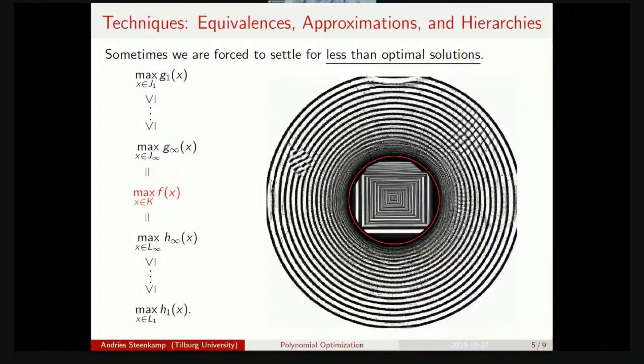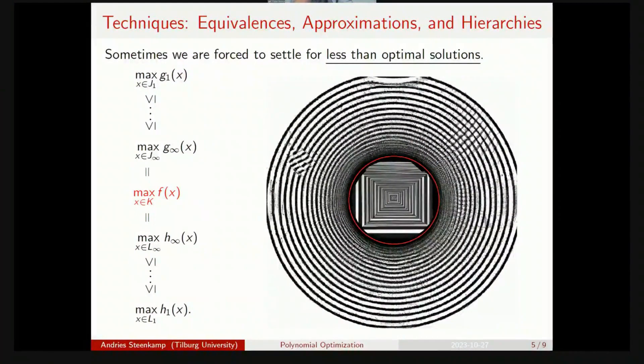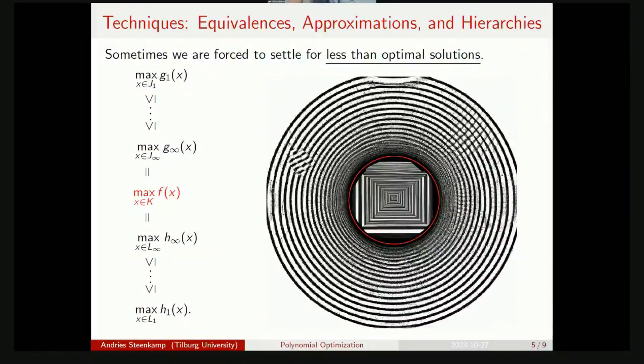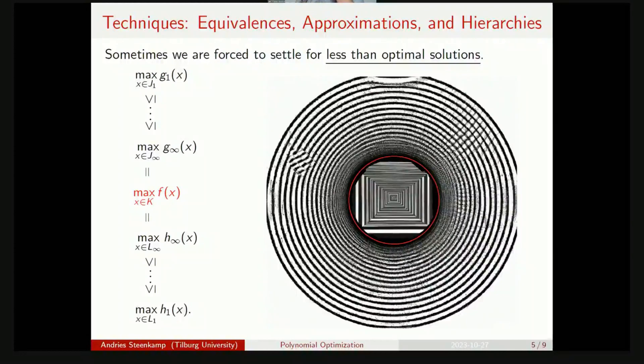Die tweede stel technieke is, covalenties, benaderings en hiërarchie. So, jy wil nou die optimiseringsprobleem in rooi oplos, maar jy kan nie, is te moeilik vir een of haar rede. Maar jy kan soms een gelijkstaande of equivalente optimiseringsprobleem kry.